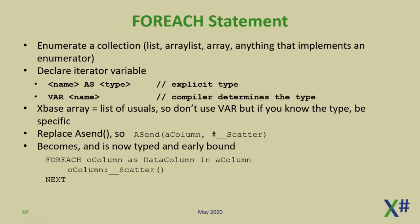Let's go to the 'for each' statement. Something new in the language compared to Visual Objects is the 'for each' statement — it's a mechanism for enumerating collections, arrays, etc. You declare a loop variable either in the syntax 'name as type' or 'var name' where the compiler determines the type. If you enumerate an Xbase array, that is a list of 'usual', so if you use 'var' there, the compiler says this is a list of usuals and you have to be specific about the type in those cases.